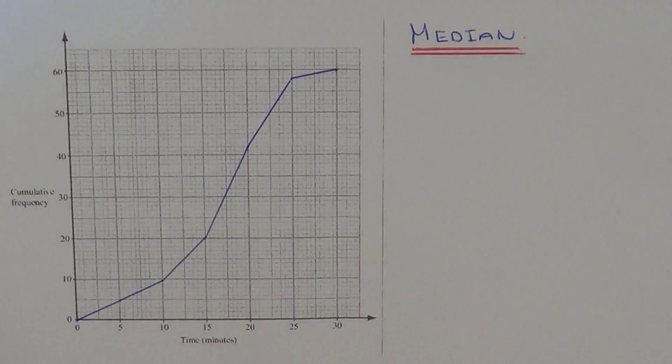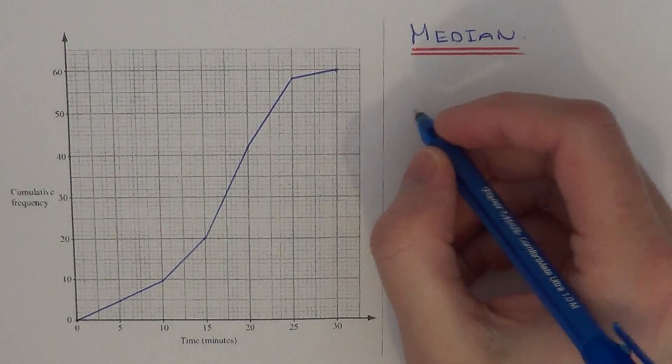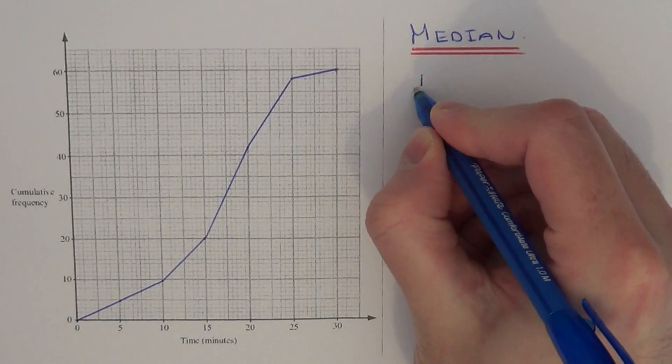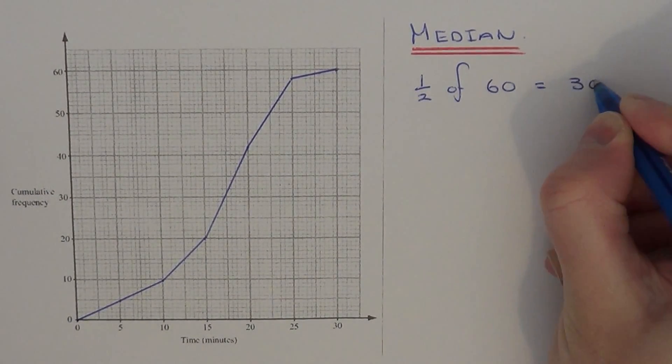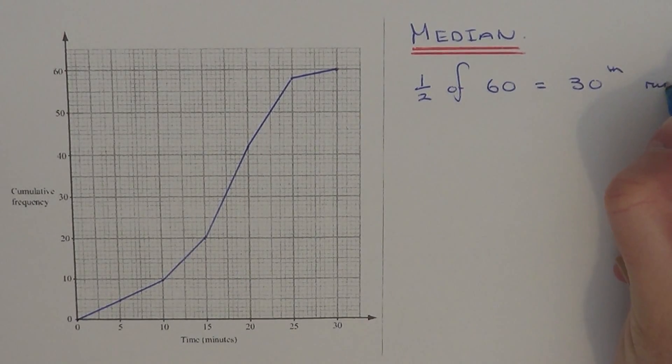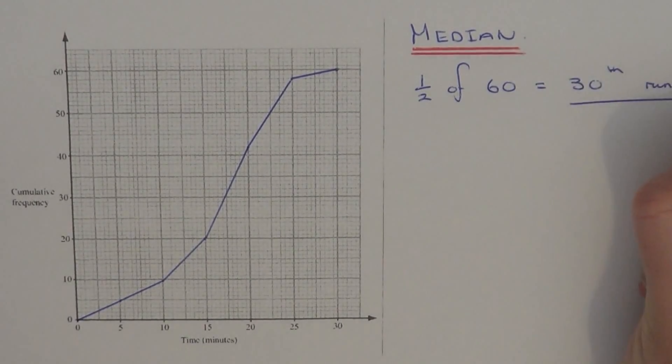Since the median is halfway, you need to work out half of the total. If you do half of 60, that will give you 30. So the median will occur on the 30th runner.